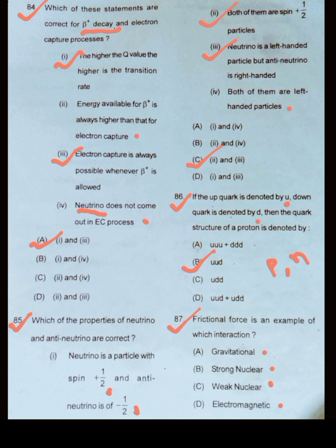Actually, gravitational interaction accounts for the force of attraction between the massive bodies. And the nuclear interaction accounts for the nuclear forces, nuclear attraction of nuclear particles. Whereas, this electromagnetic interaction is responsible for frictional force.